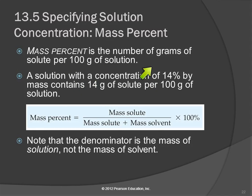So a solution with a concentration of 14% would have 14 grams in 100 grams of the solution. And so it's a really nice measure of concentration if you're just dealing with masses, if you're not concerned with number of particles.